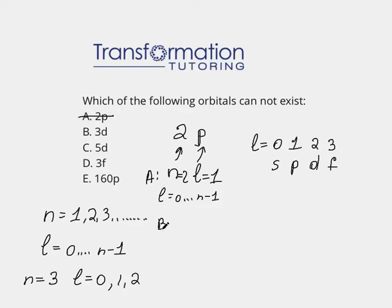Now let's go to choice b. Choice b is 3d, which means our n is equal to 3, and our l must be equal to 2. If n is equal to 3, can l be equal to 2? Well, if n is equal to 3, my l could be 0, 1, or 2. Remember, it goes from 0 to n minus 1, 0 to 3 minus 1, so 0 through 2. Here l is 2, so that works. Eliminate.